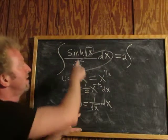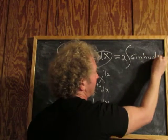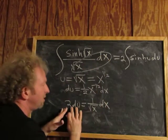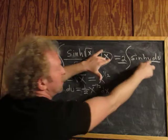So 2 sinh u du. That's it. What happened to this? Well, it went away because this over this is 2 du. And then what's left? sinh u.